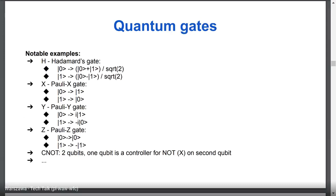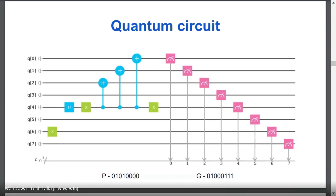Based on those gates, we can build nice circuits. This is an example of a quantum circuit that computes my initials P and G. We have 8 qubits, initial value 0, and we transform the values using quantum gates so that after measurement, with probability 50% we receive the ASCII representation of letter P, and with probability 50% the ASCII representation of letter G. So I was able to compute my initials using this quantum circuit.